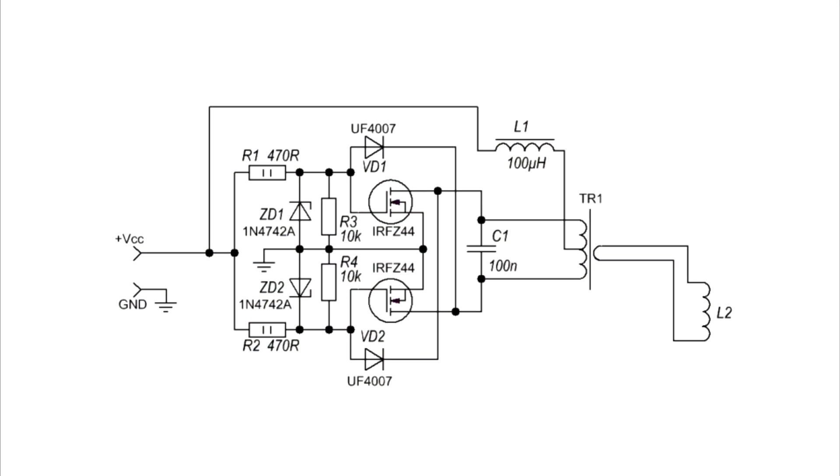The converter operates on the principle of push-pull type circuits. The primary winding of the transformer, together with a capacitor, forms a parallel oscillatory circuit.